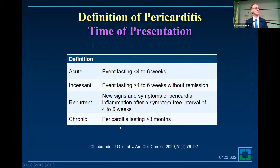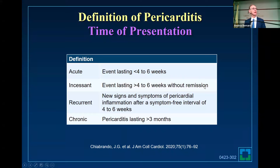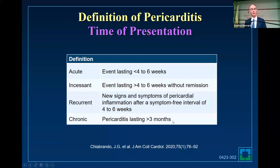Very important for definitions, especially if you're doing clinical trials — you have to define it right. Acute means the event lasts four to six weeks, perhaps up to three months. Incessant means basically non-stop symptoms without remission for three months. Recurrent means you get better and then worse after four to six weeks. Chronic means more than three months. This is how you define pericarditis.